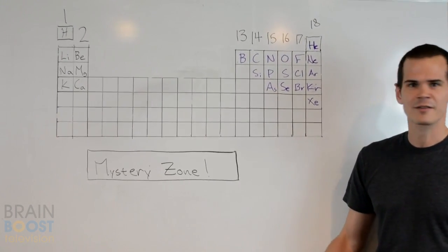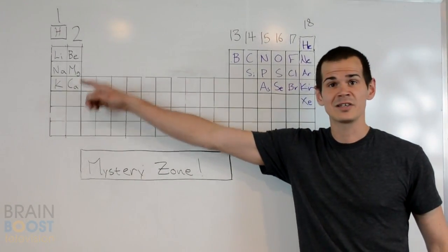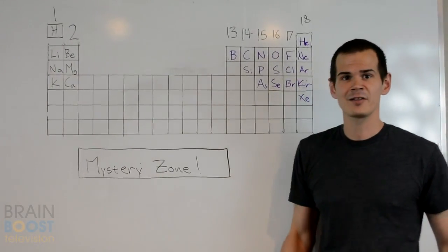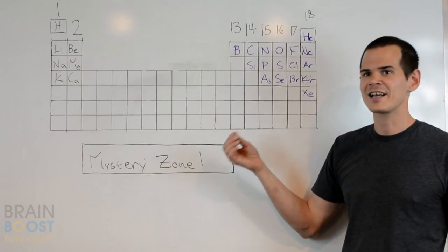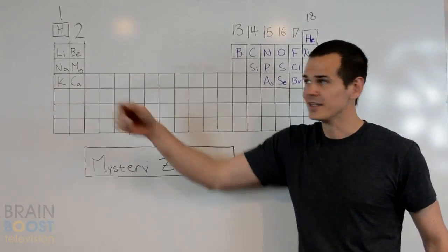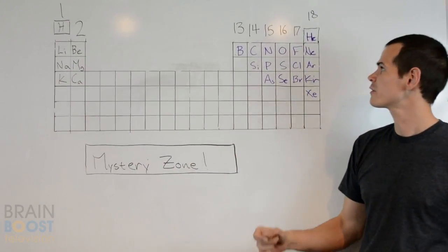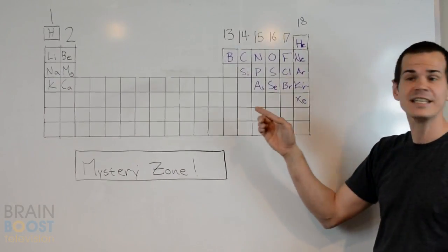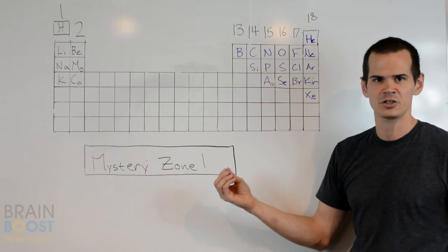A really easy tip for this is just take a look at where that element is on the periodic table, look at the number of the column it's in, and it's always the second digit of that number. So for example, if it's in column two, like magnesium, it's going to have two valence electrons. If it's in column 15, like phosphorus, it's going to have five valence electrons.